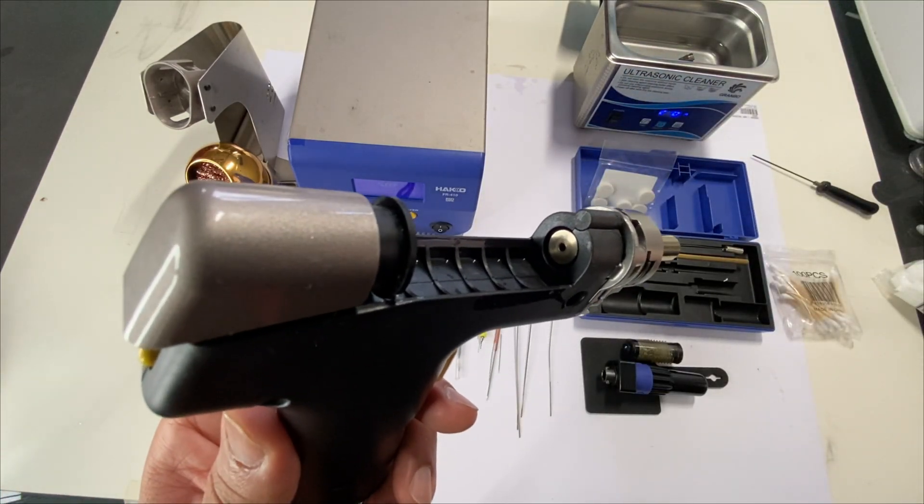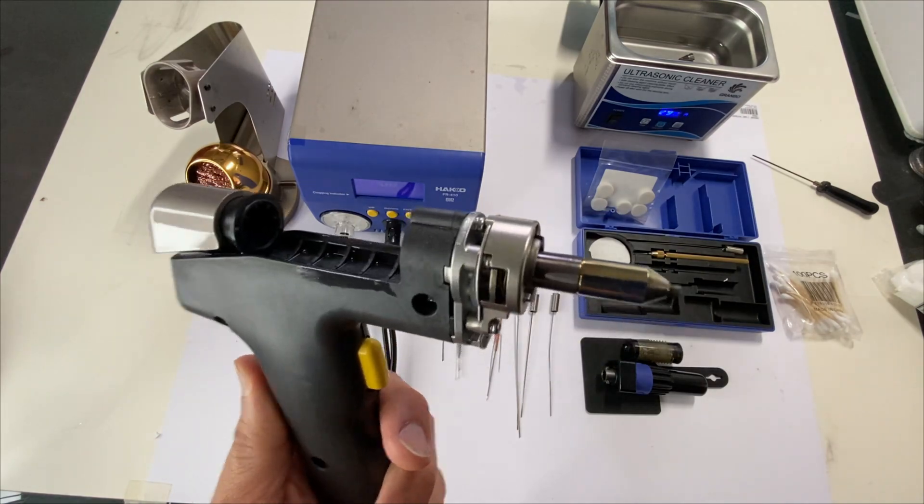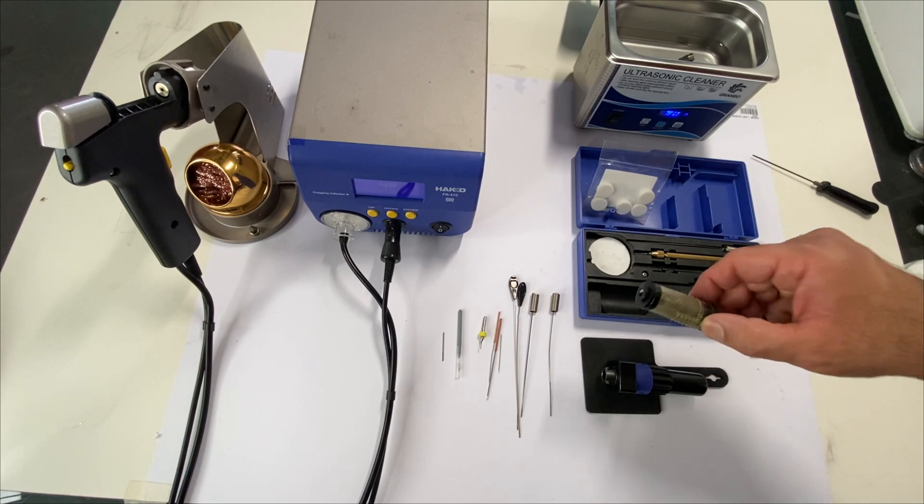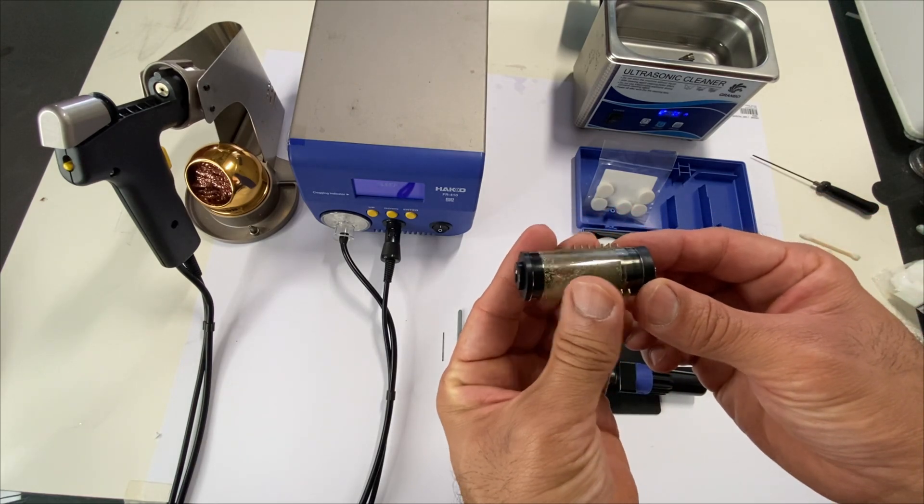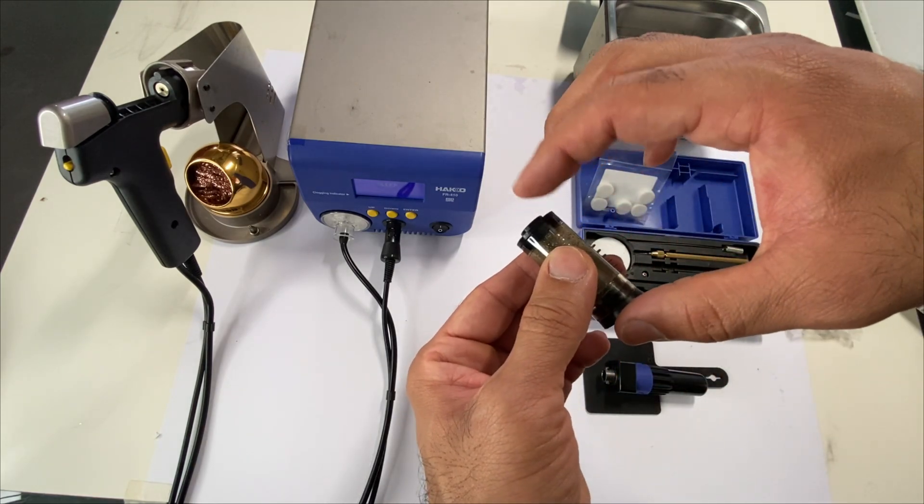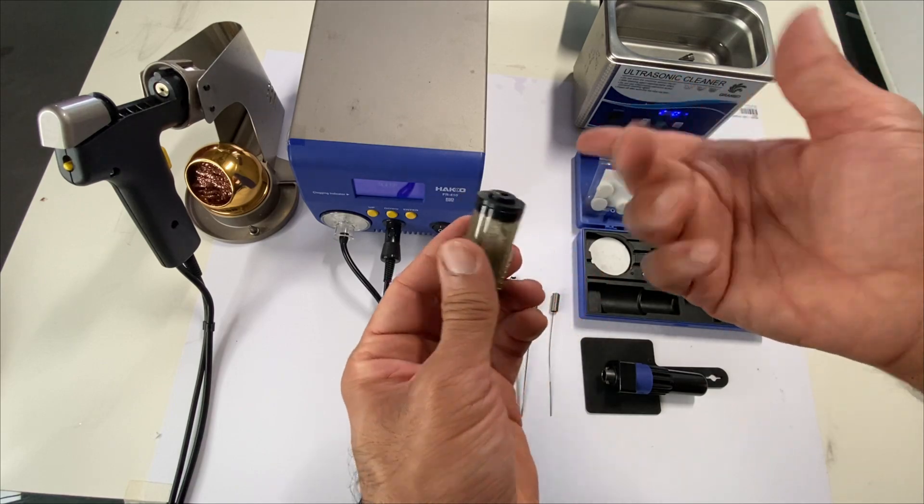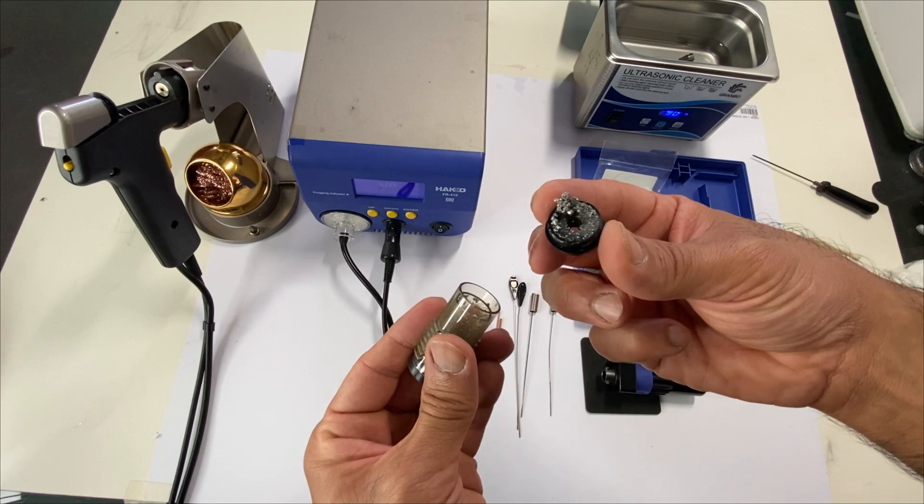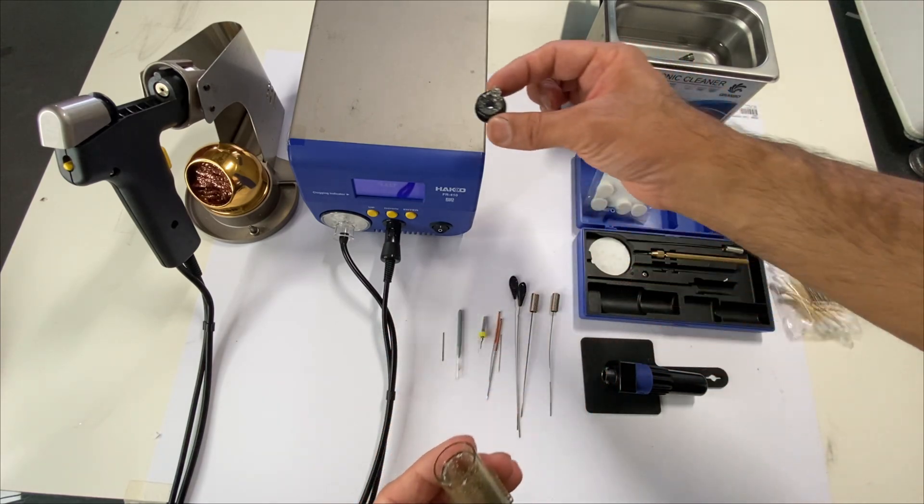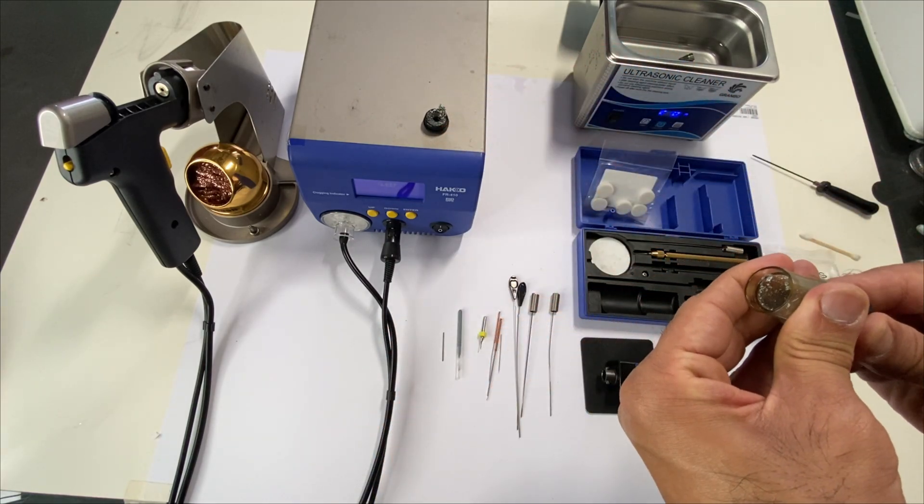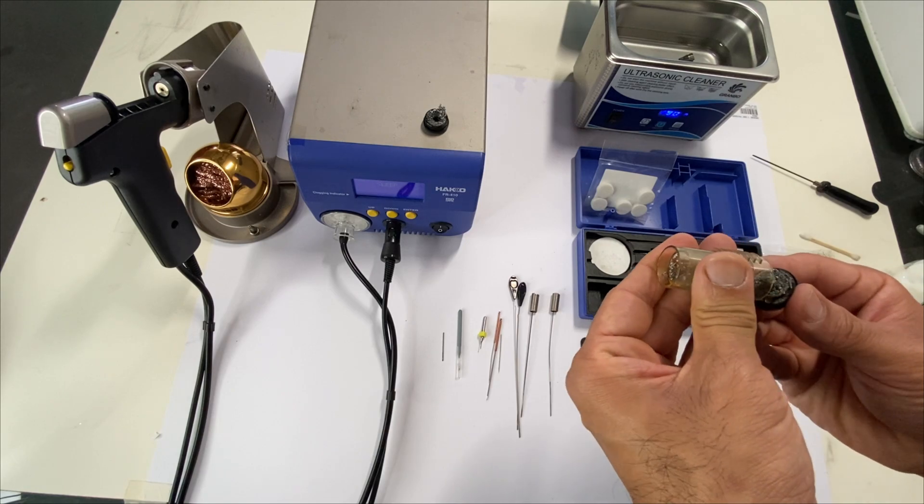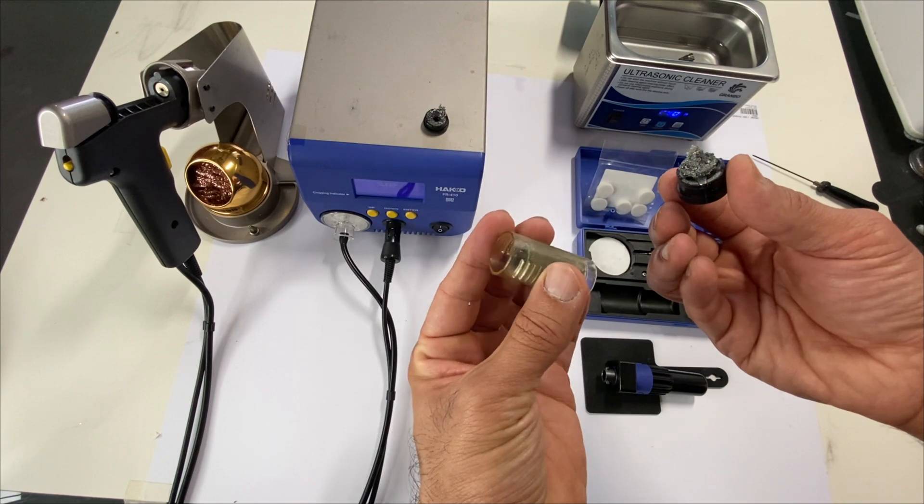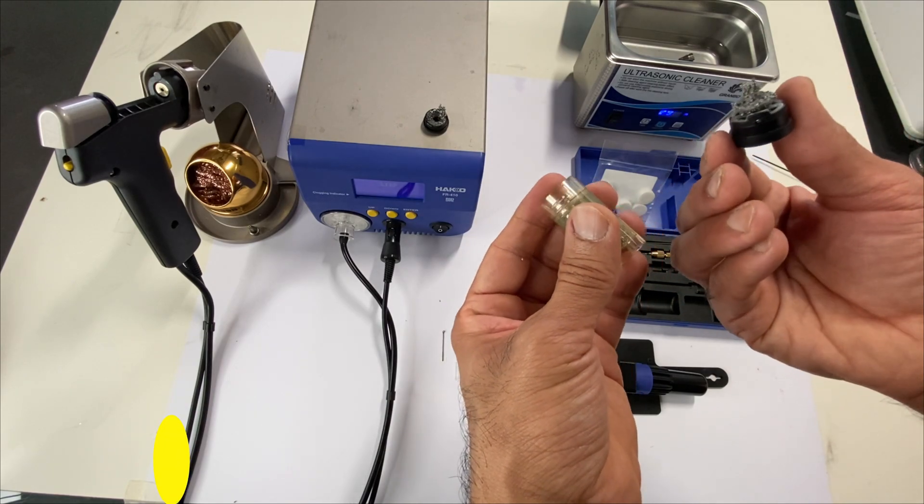Once it's all clean, your filter should look like this. The rest is we need to clean up all these two rubbers and the filter pipe assembly. So I'm just going to dip all this in iso alcohol, so there's a lot of residue there. All of this I'm just going to dip in iso alcohol and let it do its job.